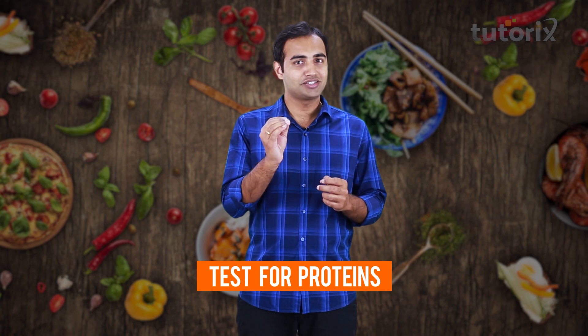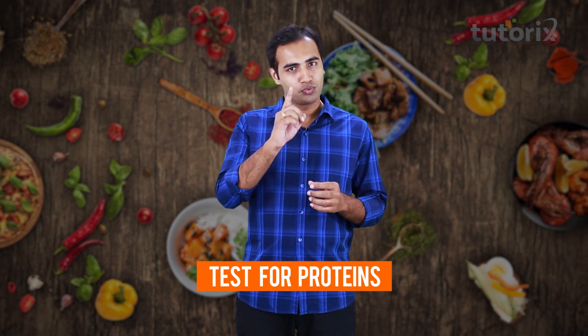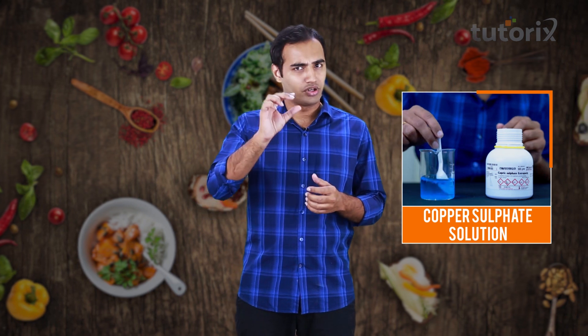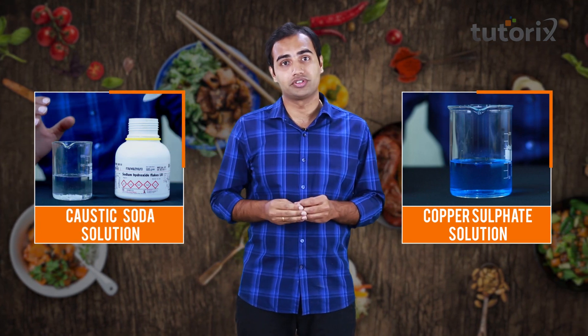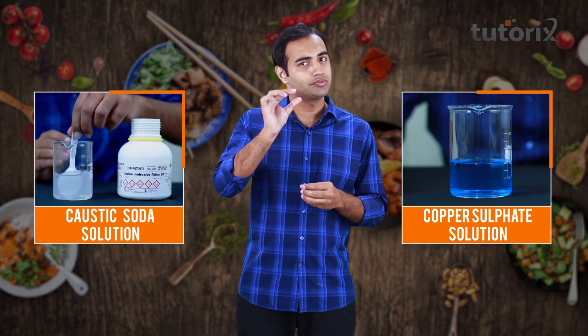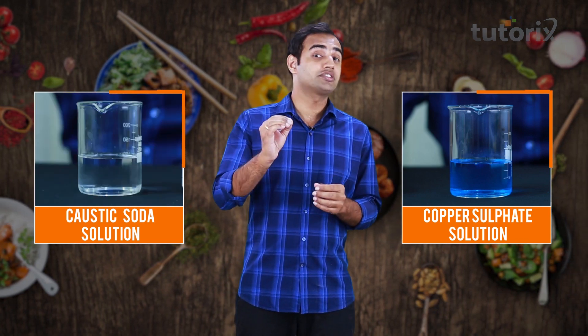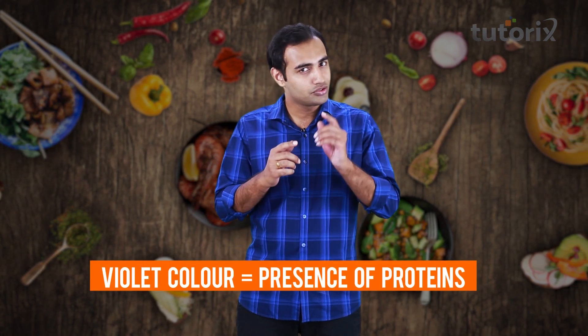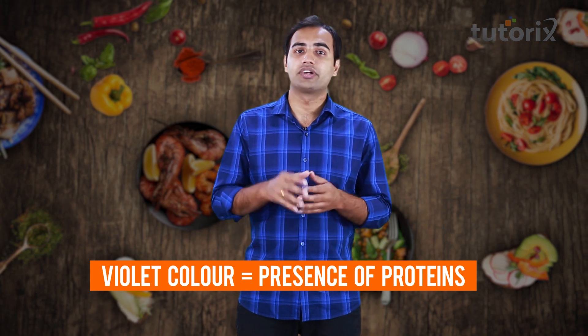Let's move on to our next test — the test for protein. For this, instead of just one reagent, you require two. The first one is the copper sulphate solution, which you can prepare by adding a few crystals of copper sulphate in a small amount of water. The second is the sodium hydroxide or caustic soda solution, prepared by adding a few crystals of caustic soda in a small amount of water. The copper sulphate solution looks blue and the caustic soda solution looks colorless. When you add a few drops of both these solutions to any food item and the color changes to violet, that is a confirmation that the food item contains proteins.